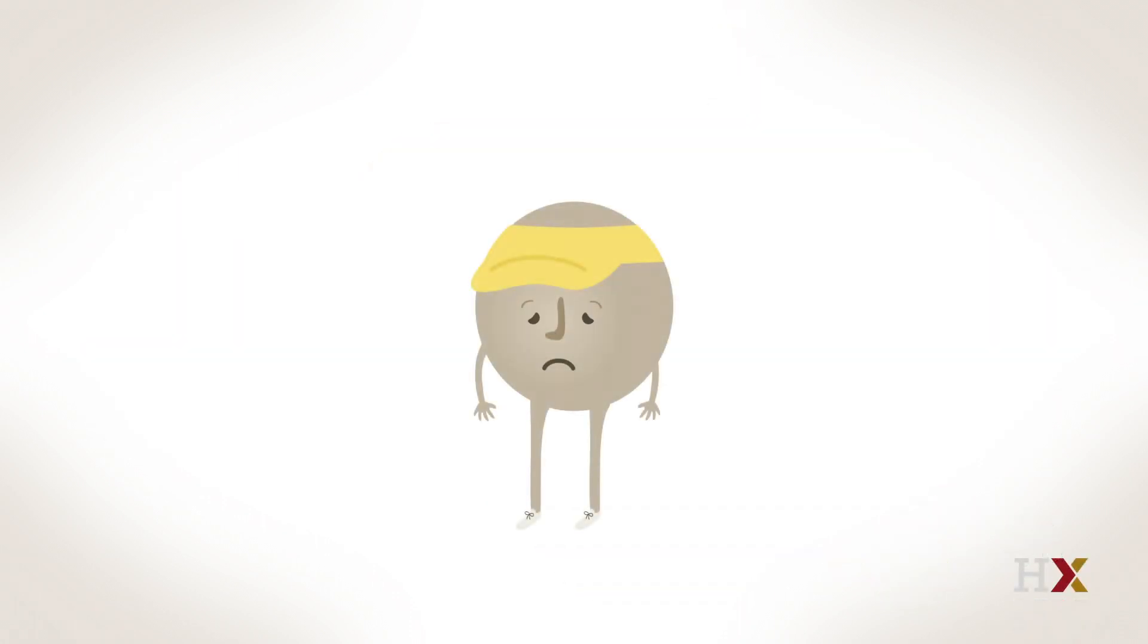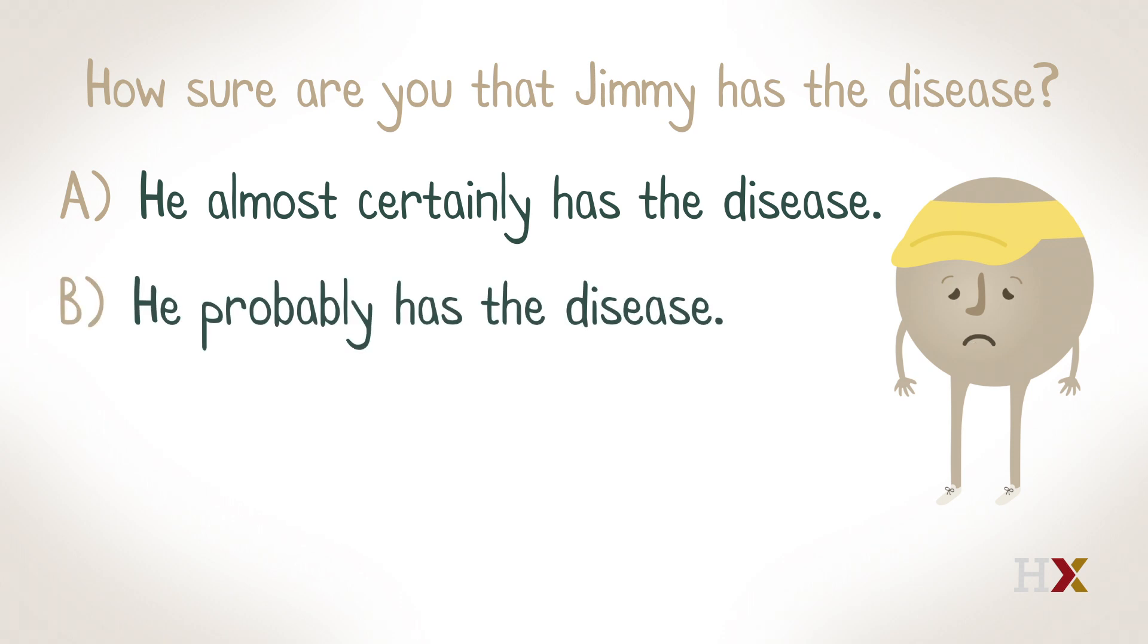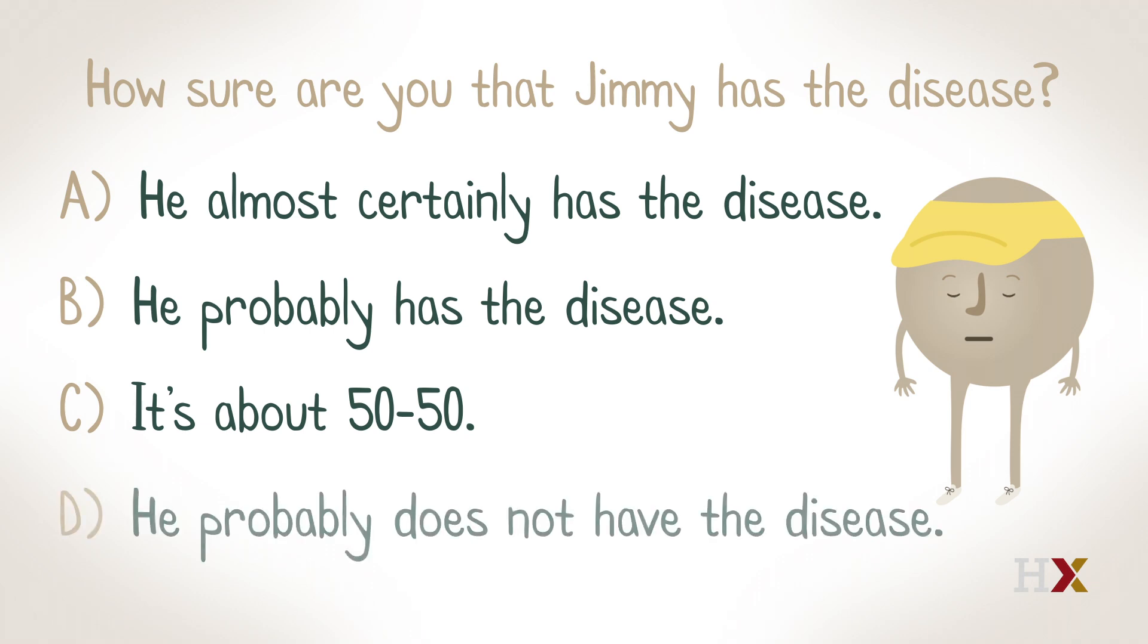Given this information, how sure are you that Jimmy has the disease? A, he almost certainly has the disease. B, he probably has the disease. C, it's about 50-50 whether he has the disease. Or D, he probably does not have the disease.